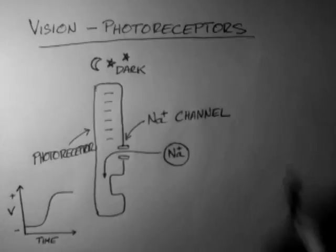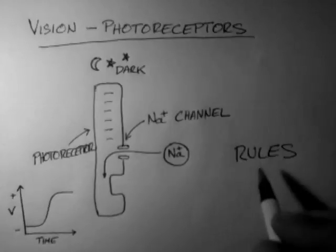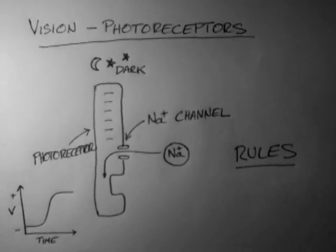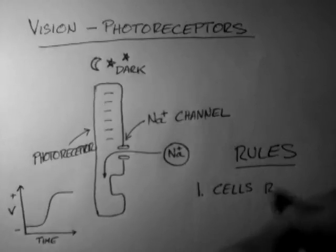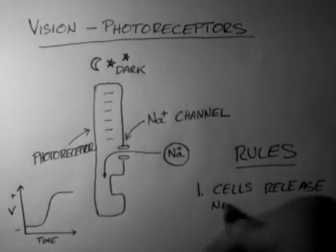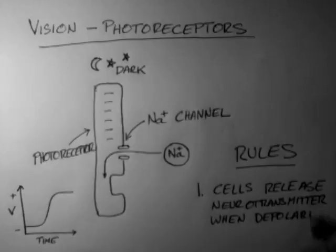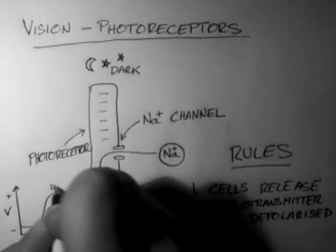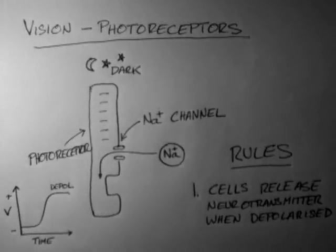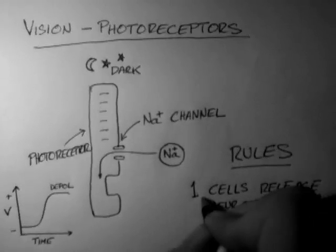So I'm going to introduce a few rules that are really important when considering the visual system. The first one is that a cell will release neurotransmitter when depolarized. So this cell is now depolarized. When the voltage inside is much more positive, that's what we call being depolarized.